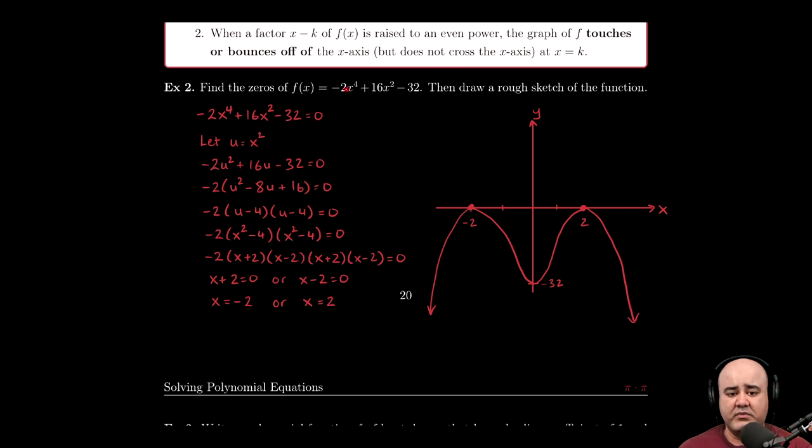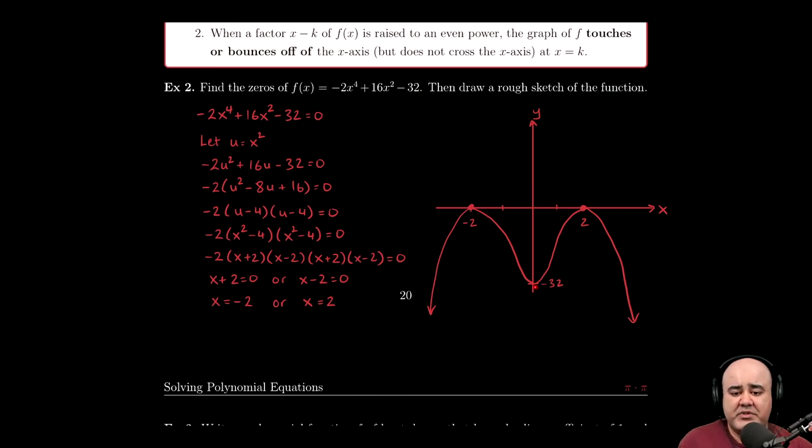We can find the y intercept pretty easily. If we plug in zero for x, this term goes away, this term goes away, and we're just left with negative 32. So I know that the y intercept is right here.